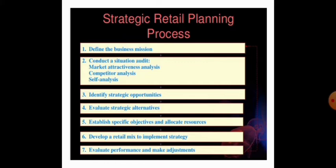The third step is identifying strategic opportunities. The fourth is evaluate strategic alternatives. The fifth is establish specific objectives and allocate resources. The sixth is develop a retail mix to implement strategy — covering location, customers, and how to target them. The seventh is evaluate performance and make adjustments. These are the seven major steps in the retail planning process.